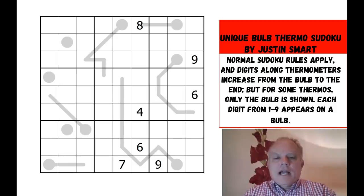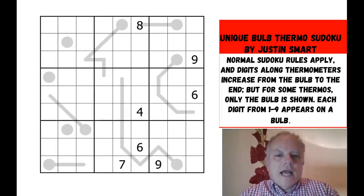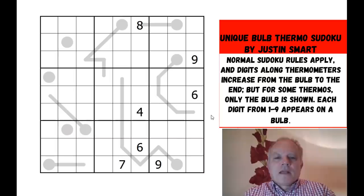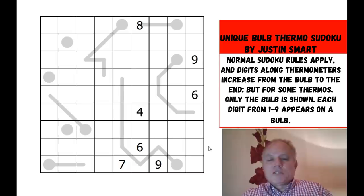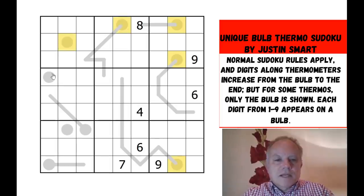Today we have a thermo Sudoku with one extra twist. This is from Justin Smart and he calls it a unique bulb thermo Sudoku. And what that means is that you'll see that there are some regular thermos in the grid, but there are also three dots, which are just bulbs. And these are kind of unknown thermometers. And the rule is that each of the digits one to nine feature on a bulb.